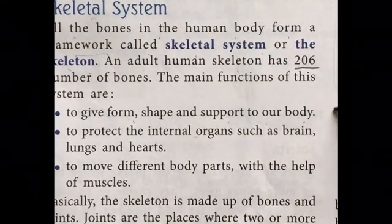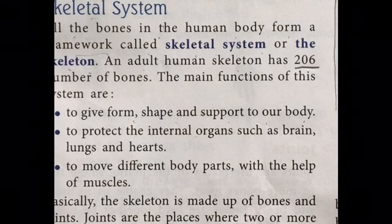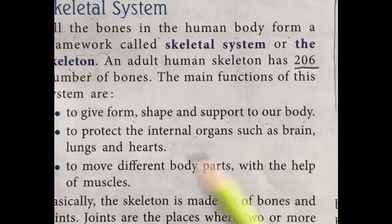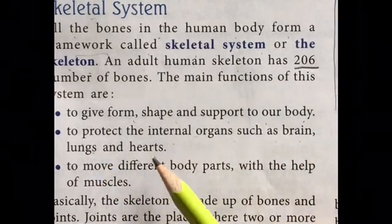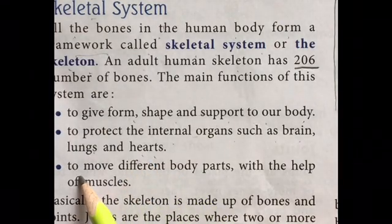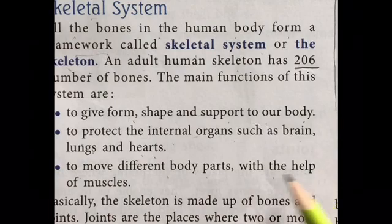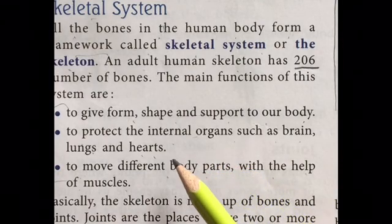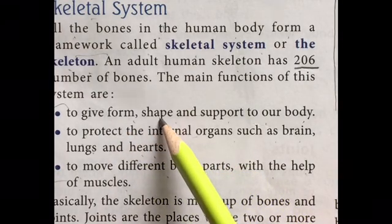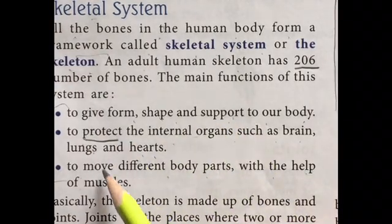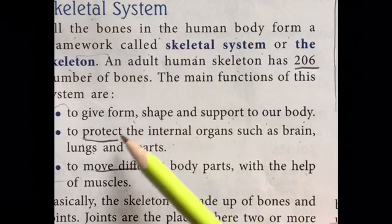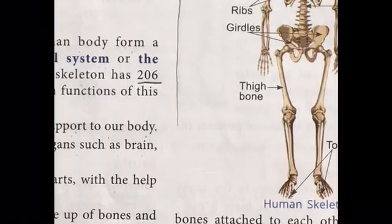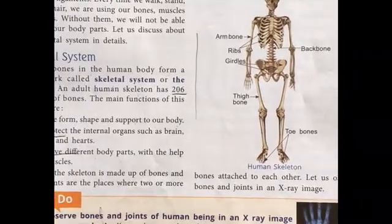Because of these bones we are able to sit and stand on our legs, to protect the internal organs such as the brain, lungs, and heart, and to move different parts with the help of muscles. So these are the three basic functions of the skeletal system: to shape and support, to protect, and to move different parts.